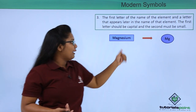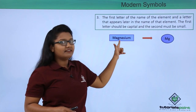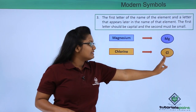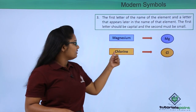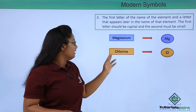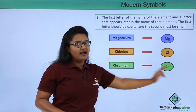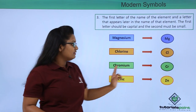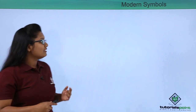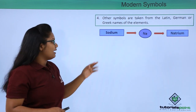Chlorine is represented by Cl, where C is the first letter and l appears later in the name chlorine. Similarly, for chromium the symbol is Cr, and for zinc the symbol is Zn.